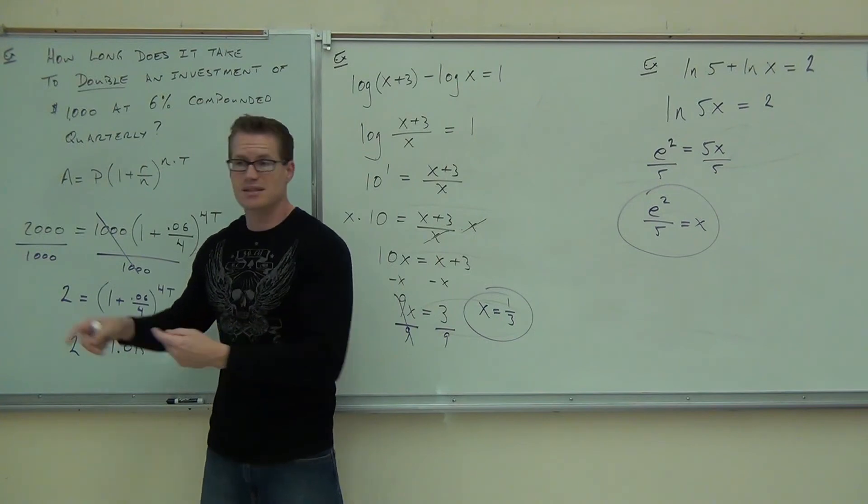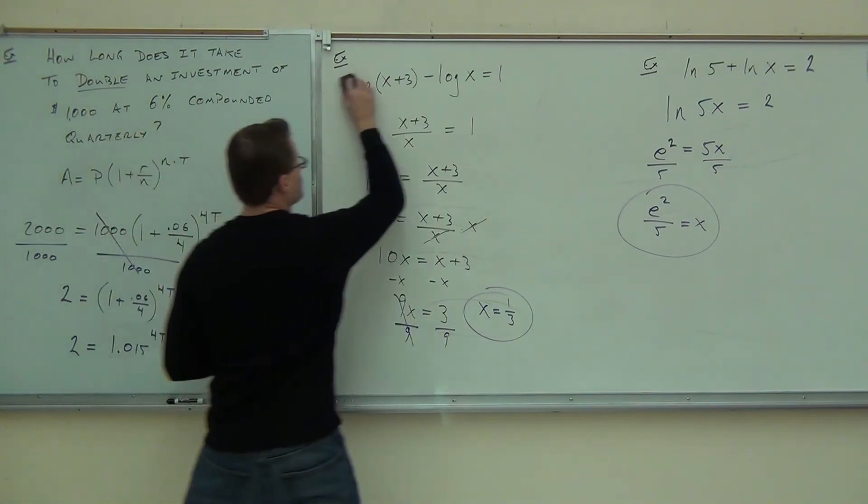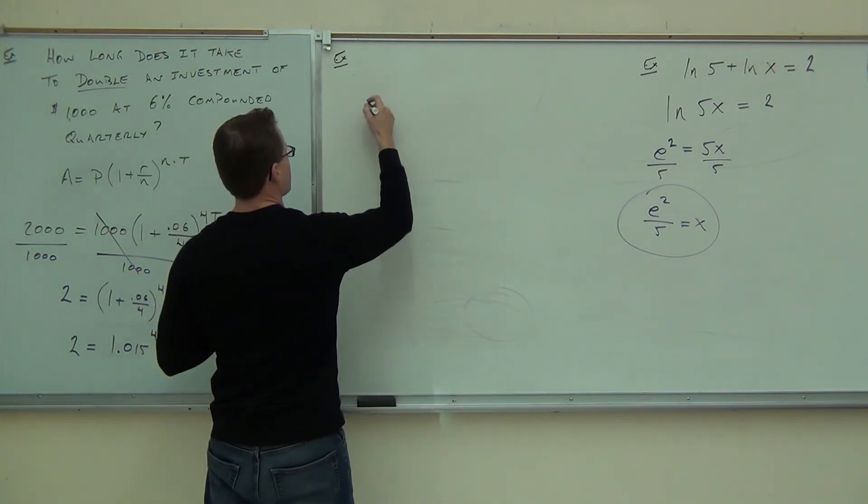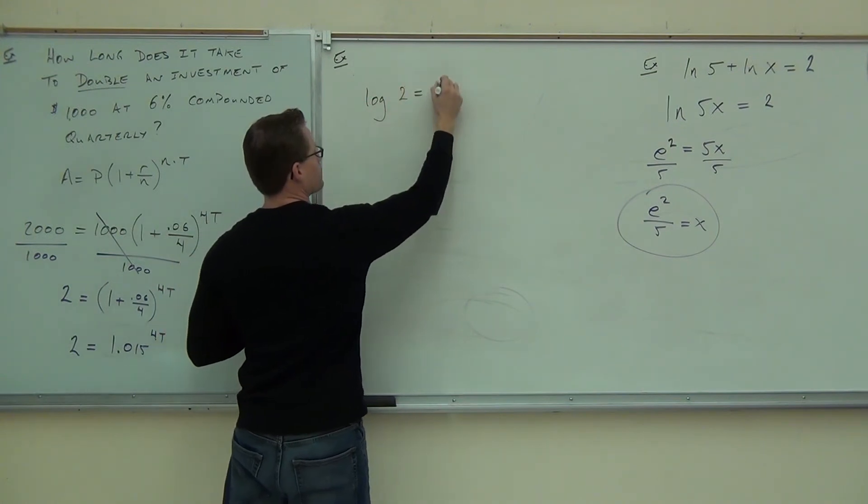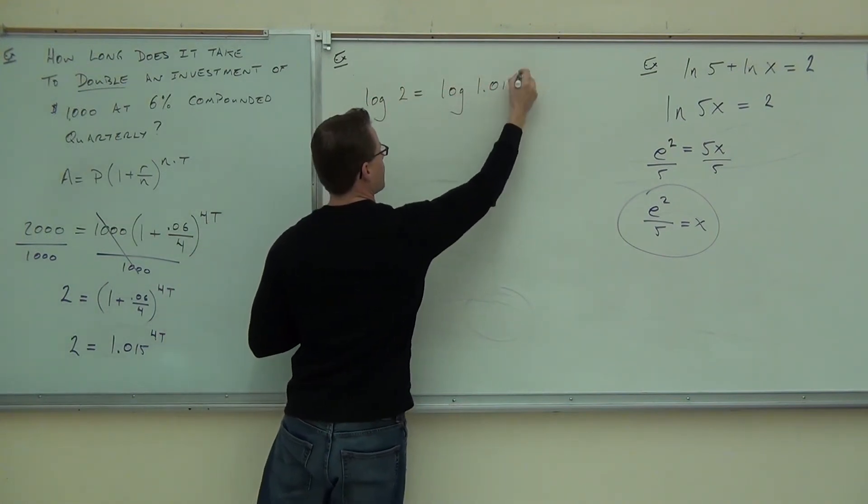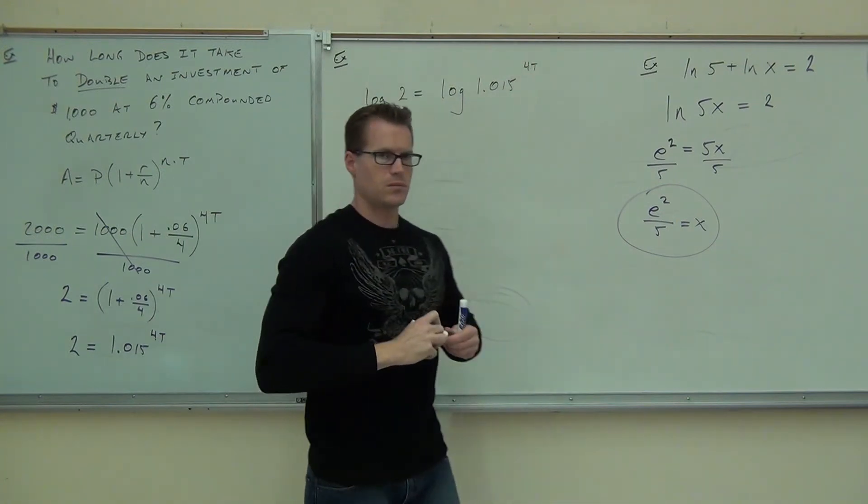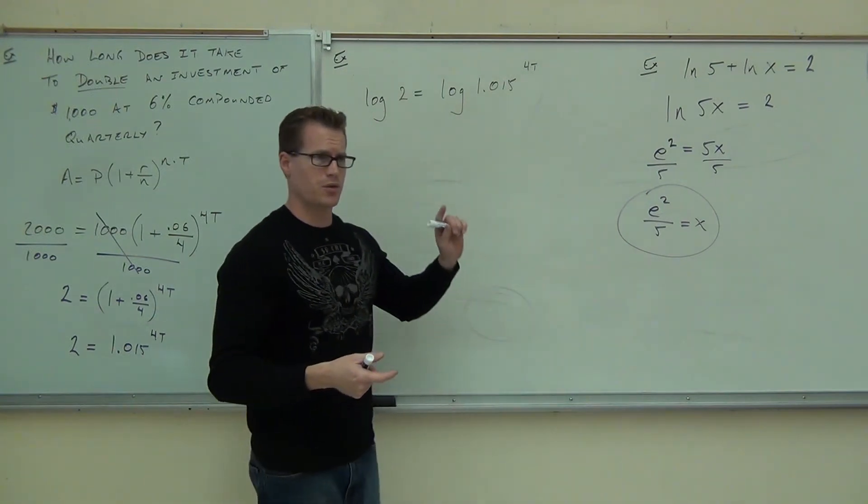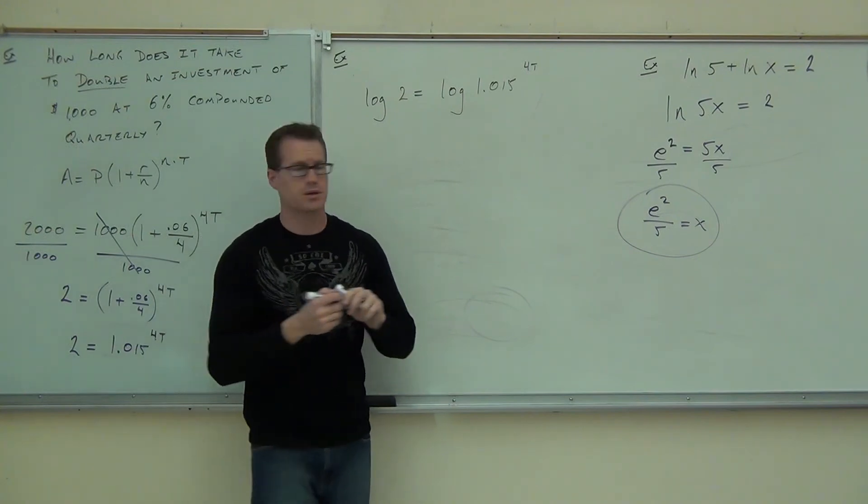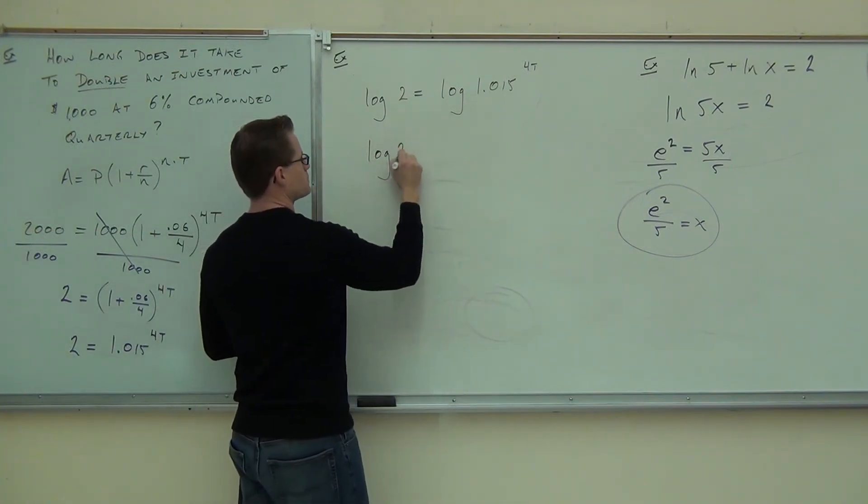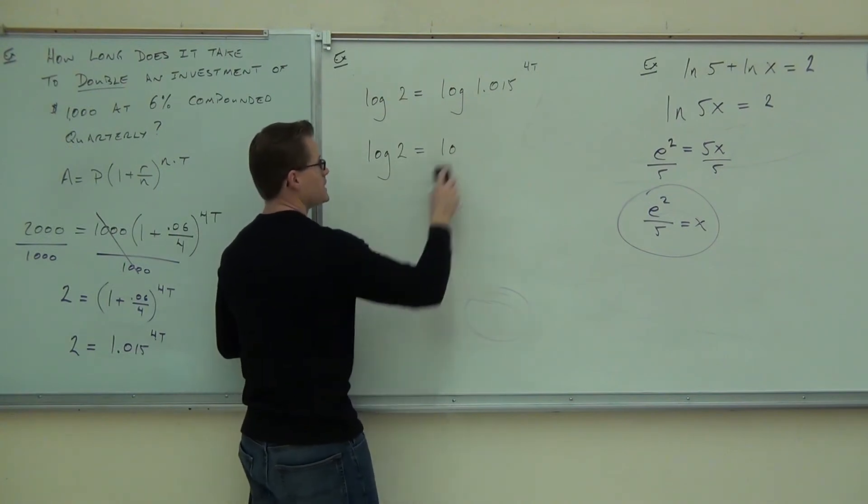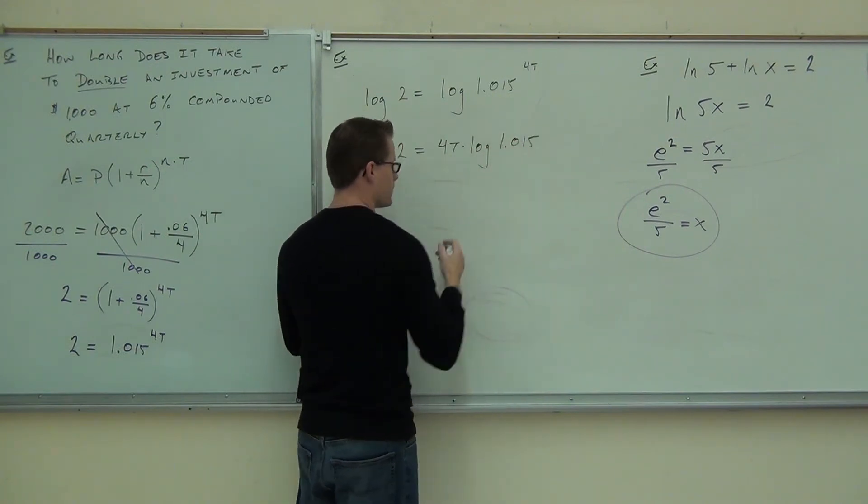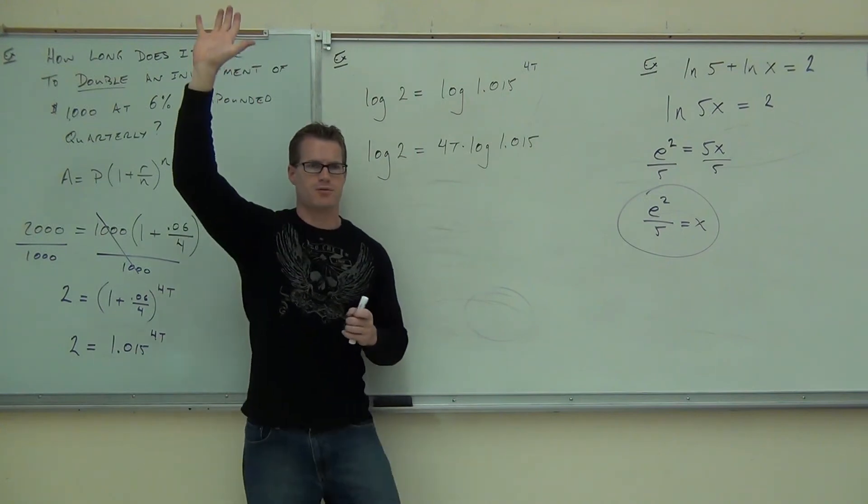It's the same type of problem. We're going to take a log of both sides over here. And what you're going to get is log of two equals log of one point zero one five to the four T. You okay with the logarithm? Yeah. It looks funny because you have a decimal, but it's the same idea. Hey, what can you do with the four T? We're going to bring it to the front. That's an exponent. So log of two equals four T log of one point zero one five.